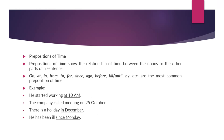Prepositions of time show the relationship between time and other parts of a sentence. Common prepositions of time include: on, at, in, from, to, for, since, ago, before. Examples: 'They started working at 10 a.m.' 'The company called me on 25th October.' 'There is a holiday in December.' 'He has been in since Monday.' All of these indicate time — answering when something happened.